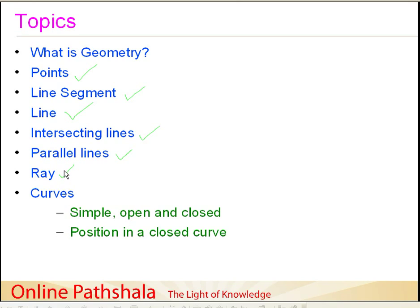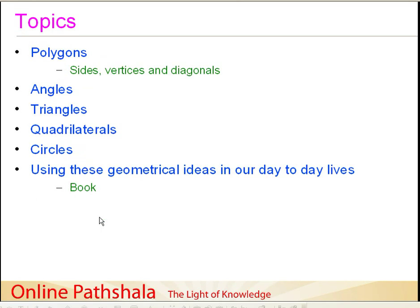Then we move ahead further and discuss the concept of curves — what we mean by curves — and then we discuss the three types of curves: a simple curve, open curve, and closed curve. We also understand how to determine the position of a particular point in a closed curve. After that, we come to a very important concept of a polygon.